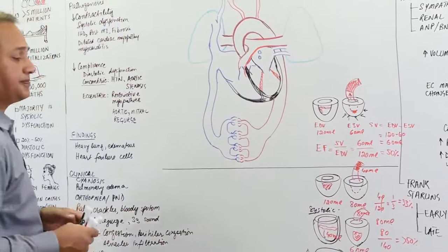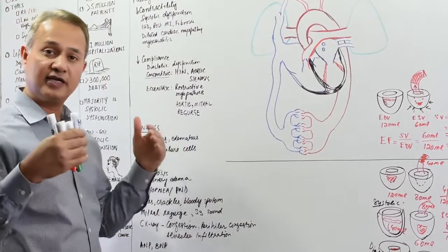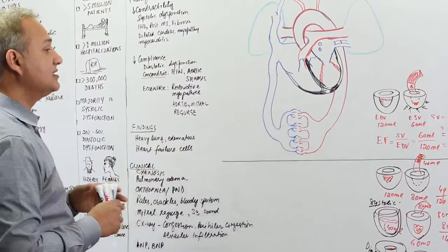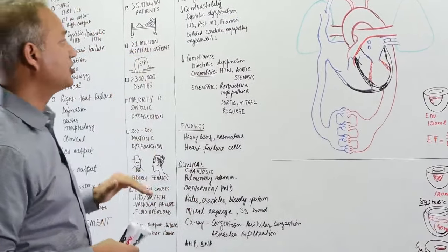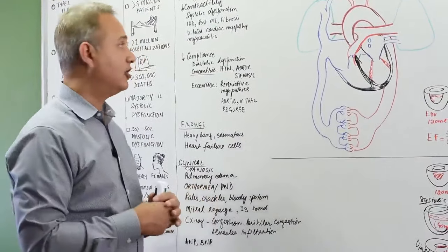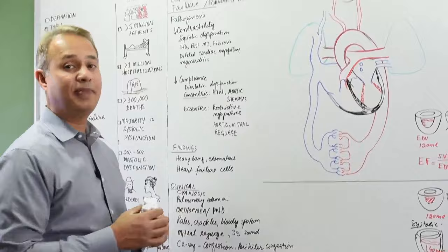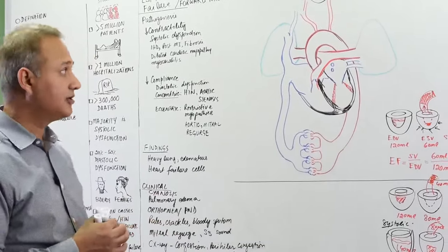Okay, so now we understand the difference between systolic and diastolic dysfunction. Let us now start with the left ventricular failure. So first of all, what is the pathogenesis of the left ventricular failure?